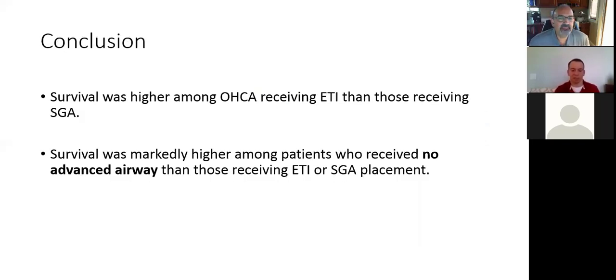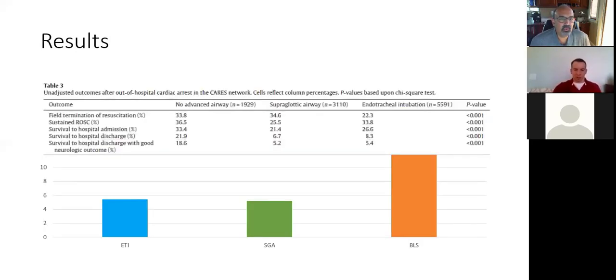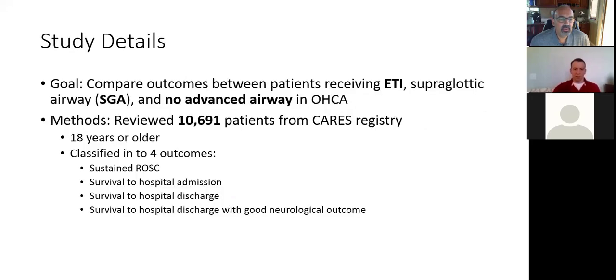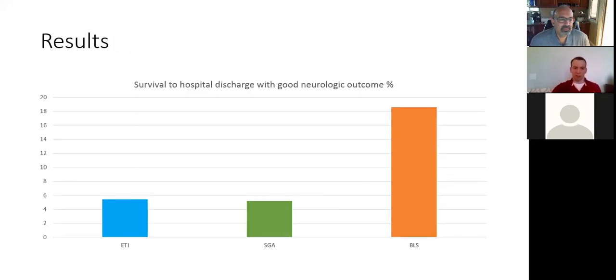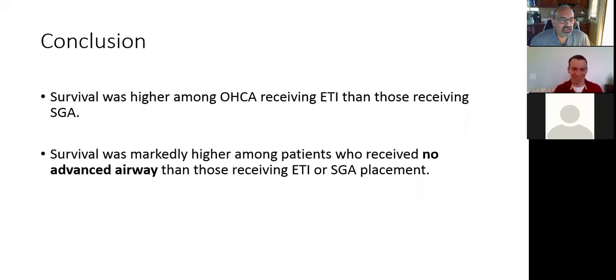Hey Seth, what did they define as a good neurologic outcome? Was it modified ranking scale 0, 1, and 2? Yes. I'm pretty sure. That's my understanding, yes, it was a modified ranking score.